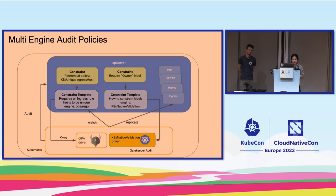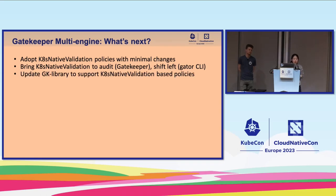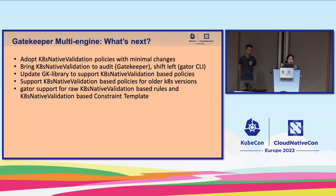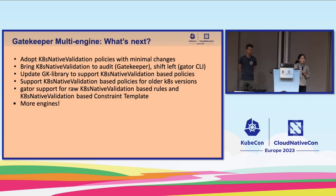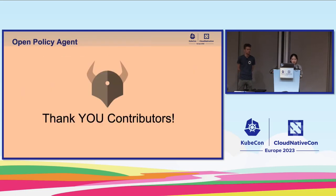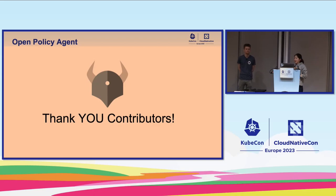The future we're envisioning is Gatekeeper as the front end for all Kubernetes policies, where everything is defined as constraints and constraint templates. The Gatekeeper controller, when it sees the engine is Kubernetes-native validation, translates that to Validating Admission Policy binding and resources in the cluster. What's next: we want to adopt Kubernetes native validation policies with minimal change and bring it to audit and shift left, support these new policies for older Kubernetes versions before 1.26, add Gator support for Kubernetes native validation based rules, and support more engines. Thank you to all the contributors for everything you've helped with in the last few releases.